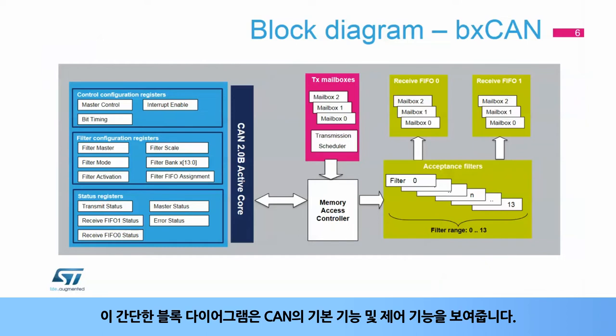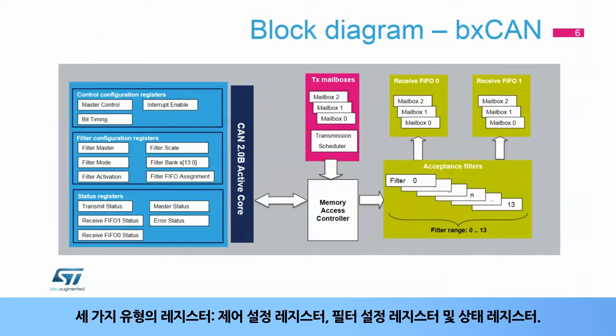This simplified block diagram of the CAN shows its basic functional and control features. Three types of registers: control configuration registers, filter configuration registers, and status registers.